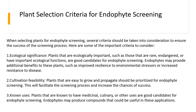The second criterion is cultivation feasibility — plants that are easy to grow and propagate should be prioritized for endophyte screening. You can't just take a single small plant as a sample; you may need to propagate it, so there should be cultivation feasibility. This will facilitate the screening process and increase the chances of success. The third criterion is known uses — plants known for their medicinal, culinary, or other purposes are good candidates for endophyte screening.